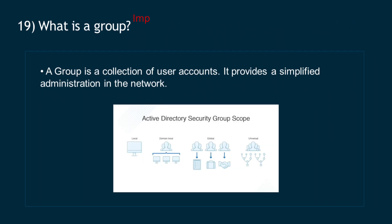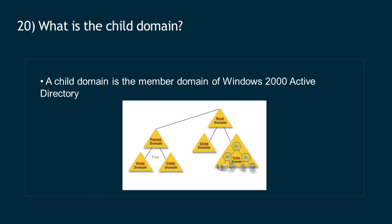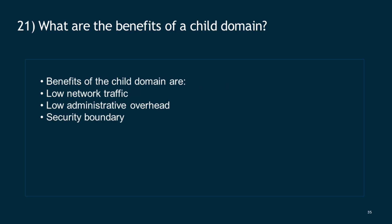Question 19: What is a group? A group is a collection of user accounts that provides simplified administration in the network. Question 20: What is a child domain? A child domain is the member domain of Windows 2000 Active Directory. Question 21: What are the benefits of a child domain? Benefits include low network traffic, low administrative overhead, and security boundary.